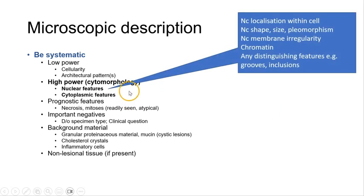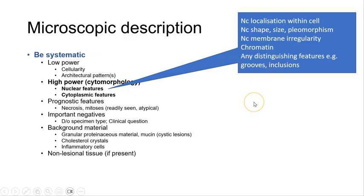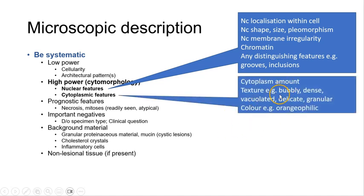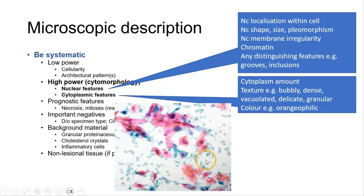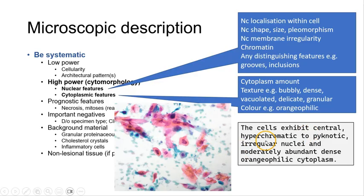Moving on to high power, we start with descriptive terms for nuclei: the localization — eccentric or central — nuclear shape, size, degree of pleomorphism, membrane irregularity, chromatin pattern (fine, even, granular, coarse, or clumped), and distinguishing features such as nuclear grooves or pseudoinclusions. For cytoplasmic features: the amount of cytoplasm, texture (bubbly, dense, vacuolated, delicate, granular, or ill-defined), and color. In this picture, we can describe the lesional cells as exhibiting central hyperchromatic to pyknotic irregular nuclei with moderately abundant dense eosinophilic cytoplasm.